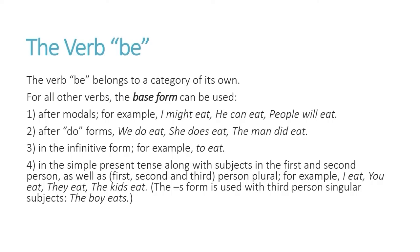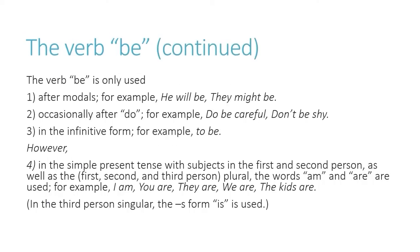However, the verb 'be' is only used in specific conditions. Number one: after modals — he will be, they might be. Occasionally it's used after 'do' — do be careful, don't be shy. And third, in the infinitive form — to be. However, in the simple present tense with first and second person subjects as well as third person plural, the words 'am' and 'are' are used: I am, you are, they are, the kids are. In the third person singular, the S-form 'is' is used.